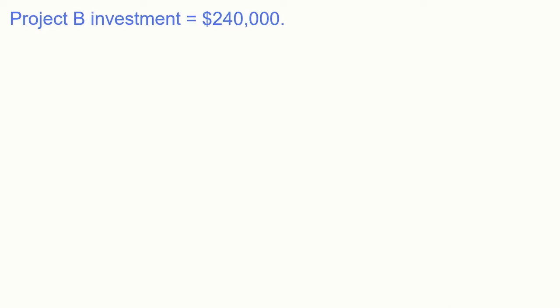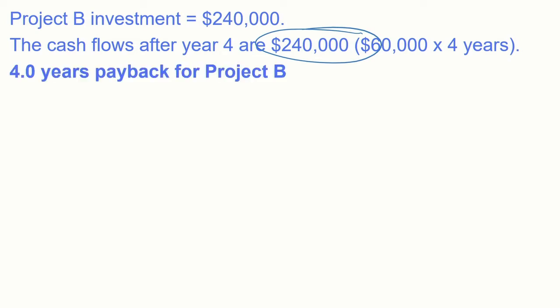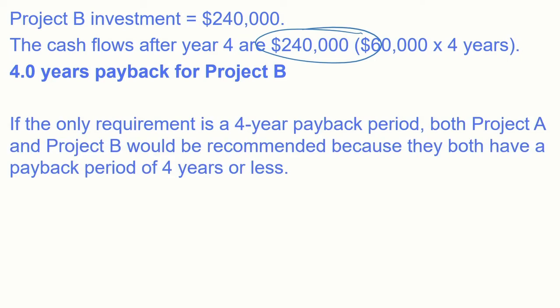For Project B, the initial investment is $240,000 and cash flows are $60,000 per year. After four years, cumulative cash inflows are exactly $240,000, so the payback period is exactly four years. With a four-year maximum payback requirement and no other constraints, both Project A and Project B would be recommended, as both have a payback period of four years or less.